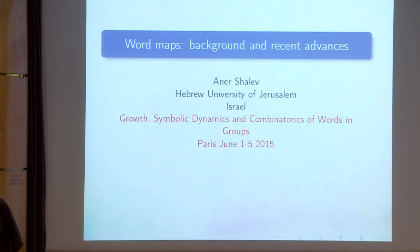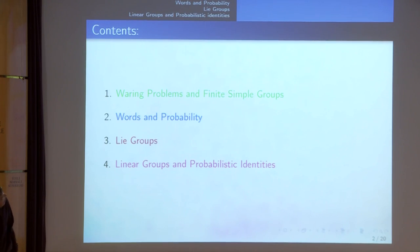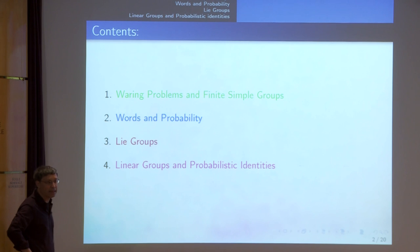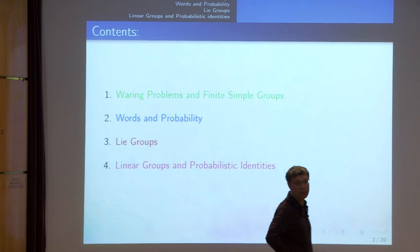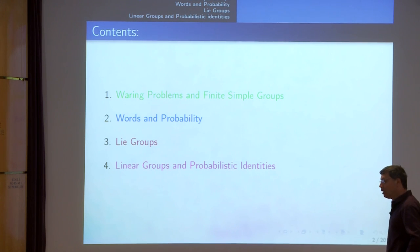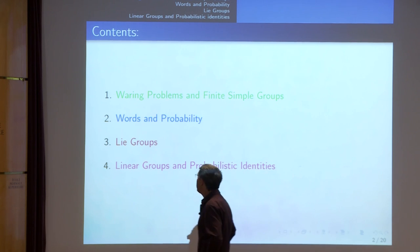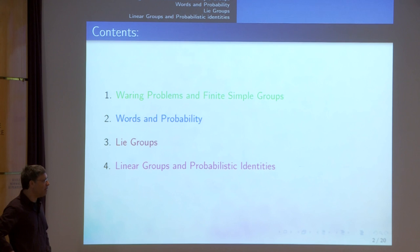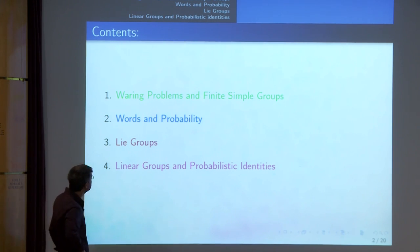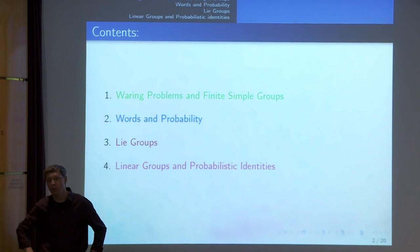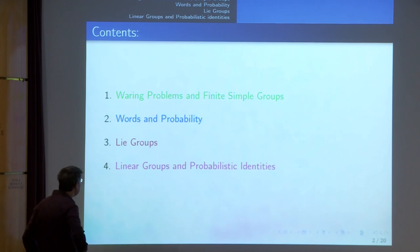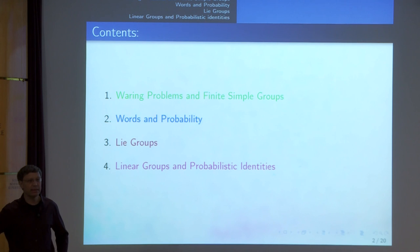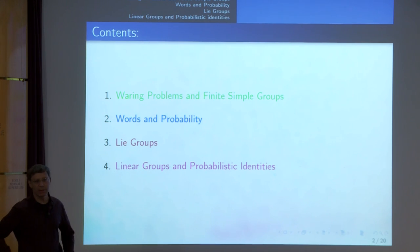The contents of the talk: we'll first say something about the Waring classical problem in number theory, and non-commutative analogs of it, mainly for finite simple groups. Then we will deal with words and probability to study word maps from a probabilistic point of view. Then we will focus on more recent results on Lie groups and connections between word maps and various Lie groups. The latest chapter is related to linear groups and a new concept of probabilistic identities. There will also be many conjectures, so you will get homework and exercises.